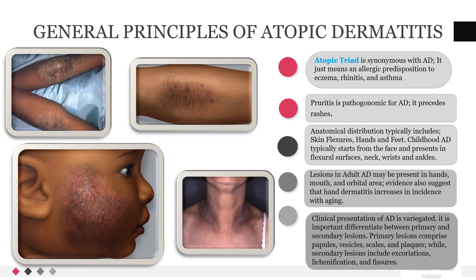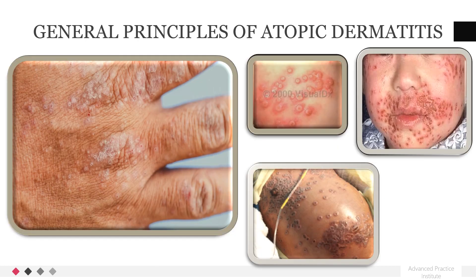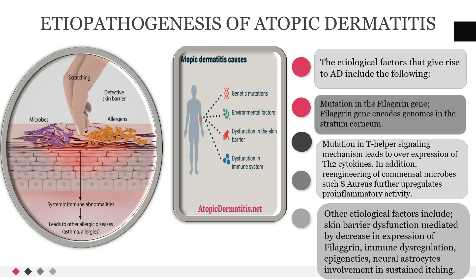It is important to differentiate between primary and secondary lesions. Primary lesions comprise papules, vesicles, scales, and plaques, while secondary lesions include excoriation, lichenification, and fissures. These images reflect the various ways AD manifests.